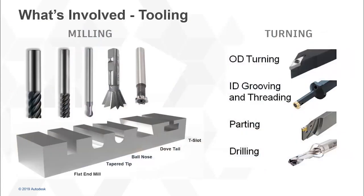Just for your reference, there's a whole bunch of different machines out there: vertical mills, horizontal, five-axis, water jet mills, lathes, rotors — all of those are basically different types of CNC machines. In today's lesson, we're actually just going to be using an end mill that has a flat bottom. But as you can see, there are tapers, ball nose, dovetail, T-slots — and on the turning side there are different tools as well.